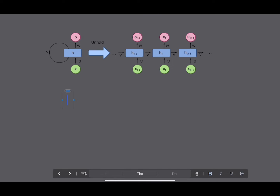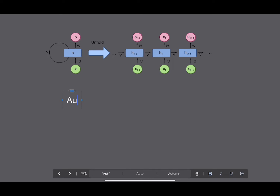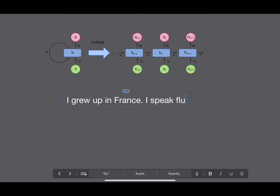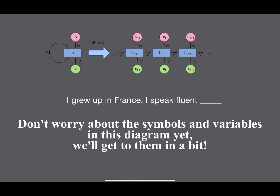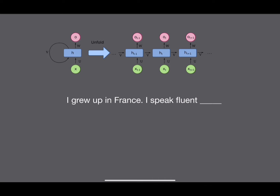Let's start high level. Let's say we're building a model that is kind of like autocomplete — we want to predict the next word in a sequence, a sentence. For example: 'I grew up in France, I speak fluent...' and the model is supposed to predict what word comes next. We know the word 'French' should come next. We're passing in some input x, which is simply our sequence of words so far.